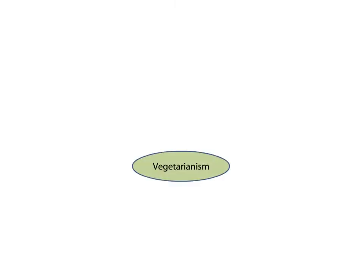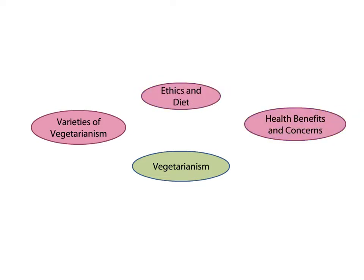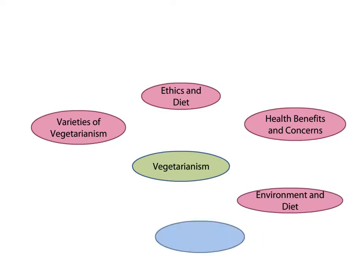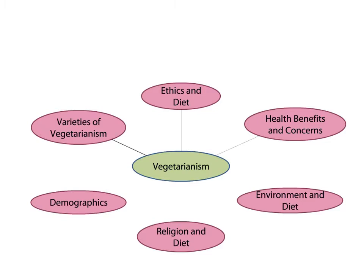Next I will begin brainstorming ideas for the topic of vegetarianism. I'll begin with related subtopics such as varieties of vegetarianism, ethics and diet, health benefits and concerns, the environment and diet, religion and diet, and demographics. The point of this first step is to identify issues that are related to my main topic, which I will represent with lines in the concept map.